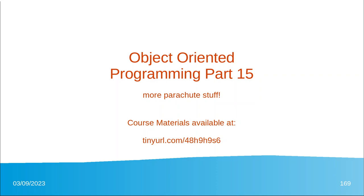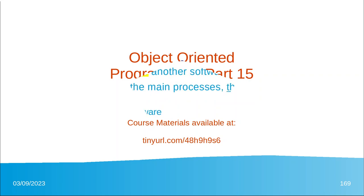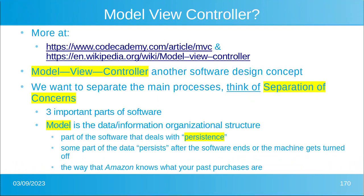Welcome back to object-oriented programming, this is part 15. We're going to do more parachute stuff because we love parachutes. We're going to talk about model-view-controller. This is a very important design concept — we want to separate the main processes. Remember separation of concerns: we want things to do one thing and one thing well, because it's easy to read, write, and debug when you don't have a jumble of code in one method.